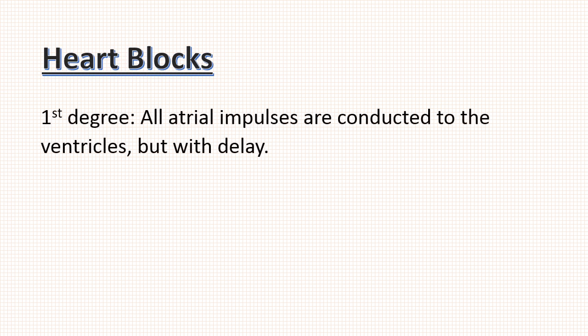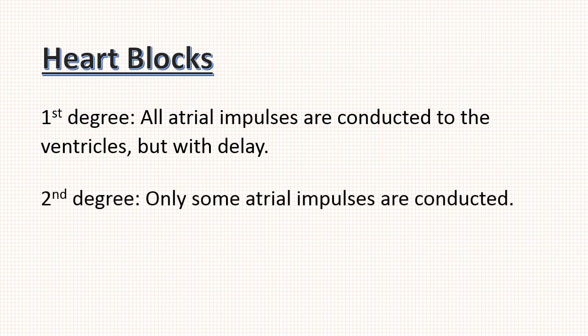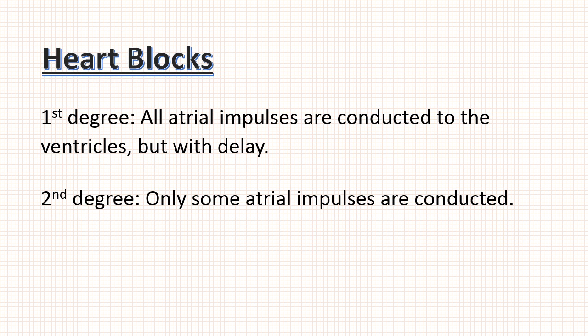There are 3 broad categories of heart blocks: 1st, 2nd, and 3rd degree. The basic concept of 1st degree heart block is that all atrial impulses are conducted to the ventricles but with a delay. In 2nd degree heart block only some atrial impulses are conducted, and in 3rd degree heart block no atrial impulses are conducted. Let us study each type in detail.